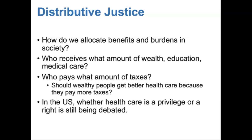How do we distribute benefits and burdens in a society? These are questions related to distributive justice. Who receives what amount of wealth, education, and medical care? Who pays what amount of taxes? And should wealthy people get better health care because they pay more taxes? In most developed countries, health care is seen as a human right, and therefore distributive justice requires that all people equally receive a reasonable level of medical services based on their need, without regard for their ability to pay. But in the U.S., whether health care is a privilege or a right is still being debated, and it is another ethical question central to medicine.